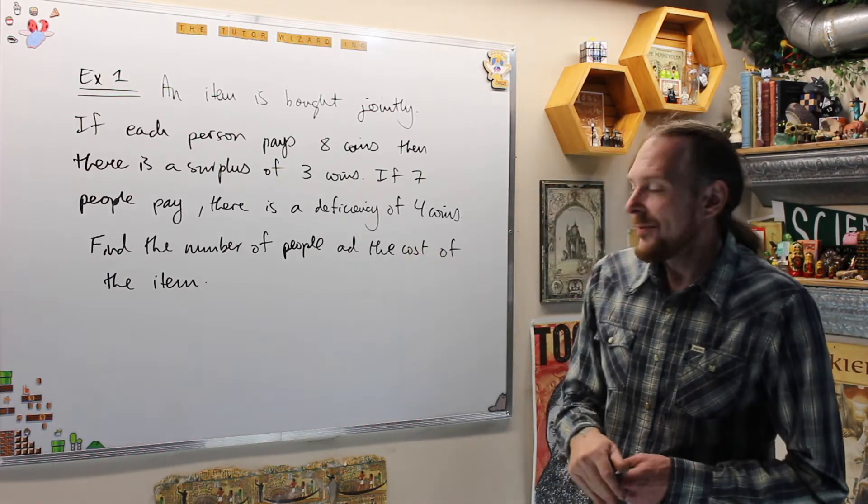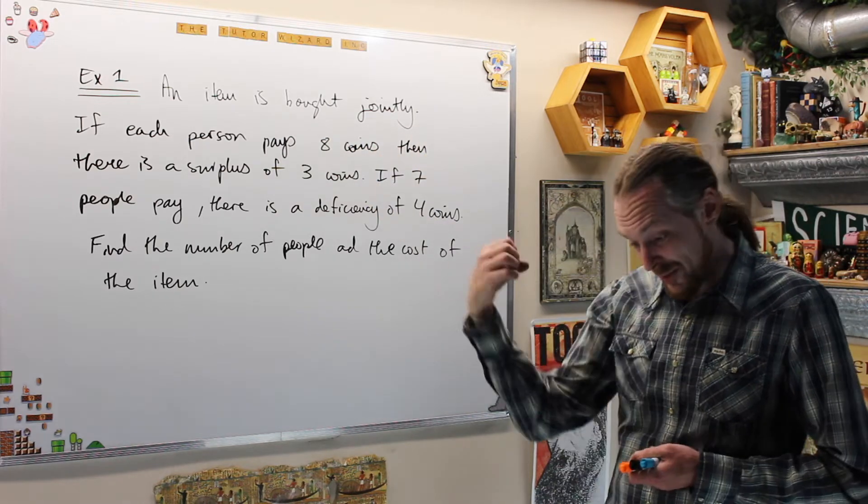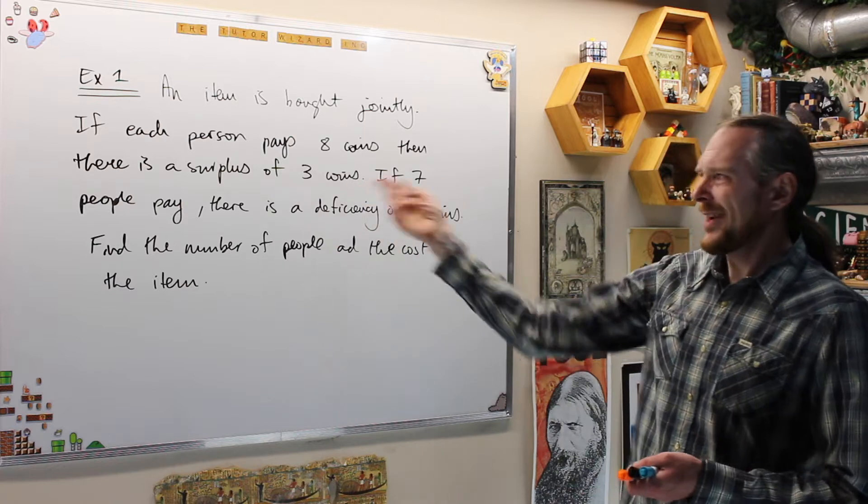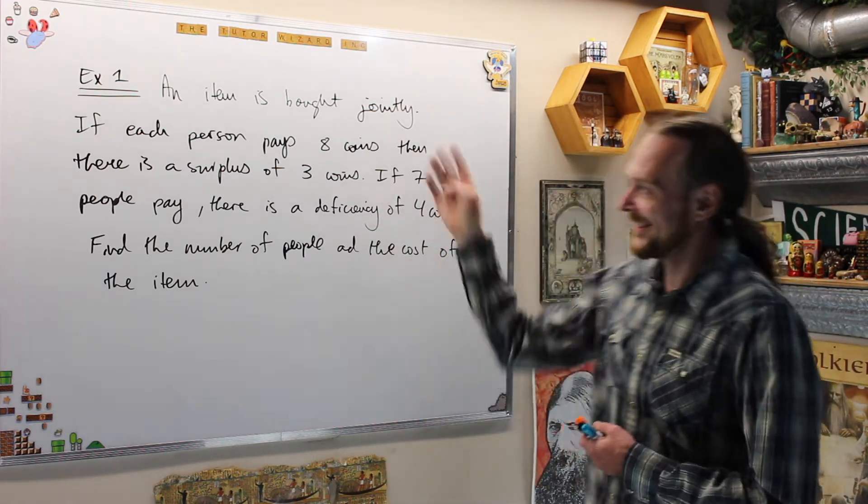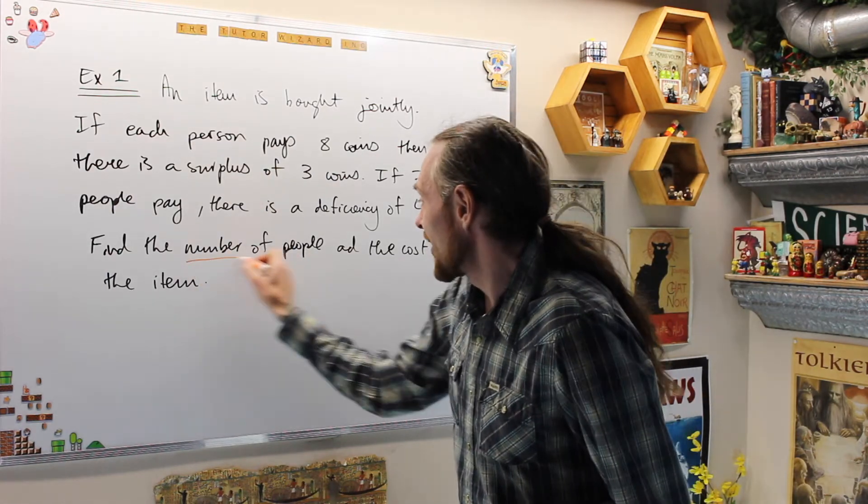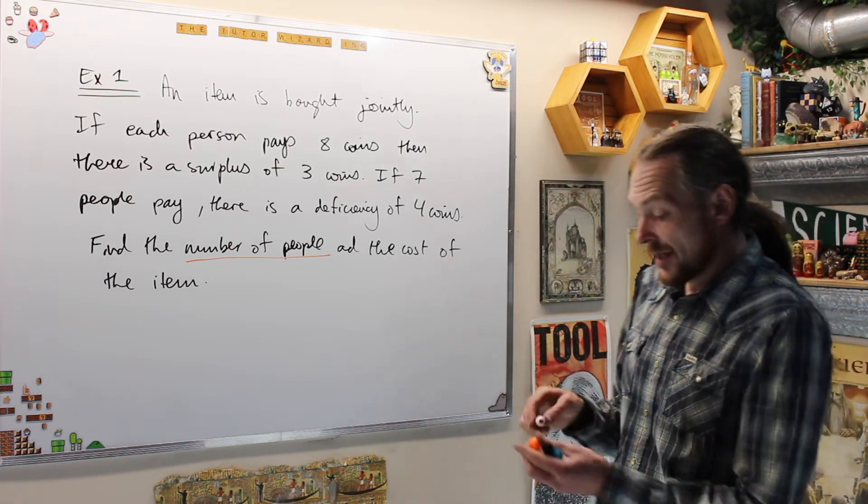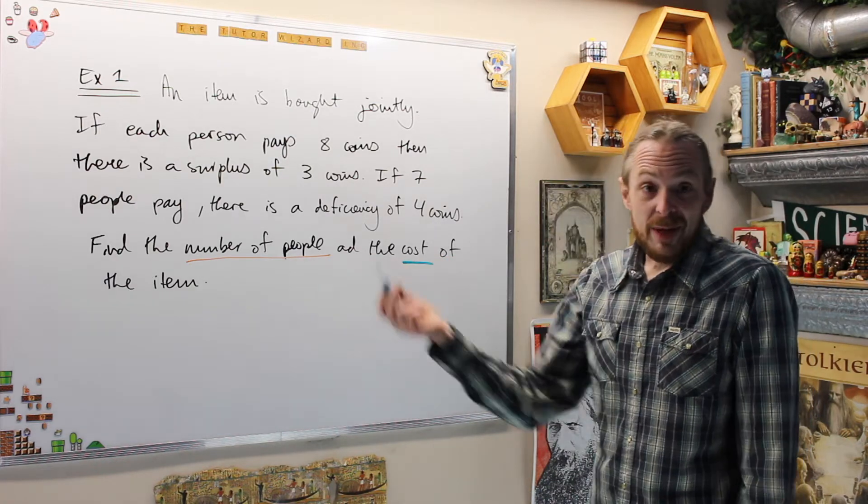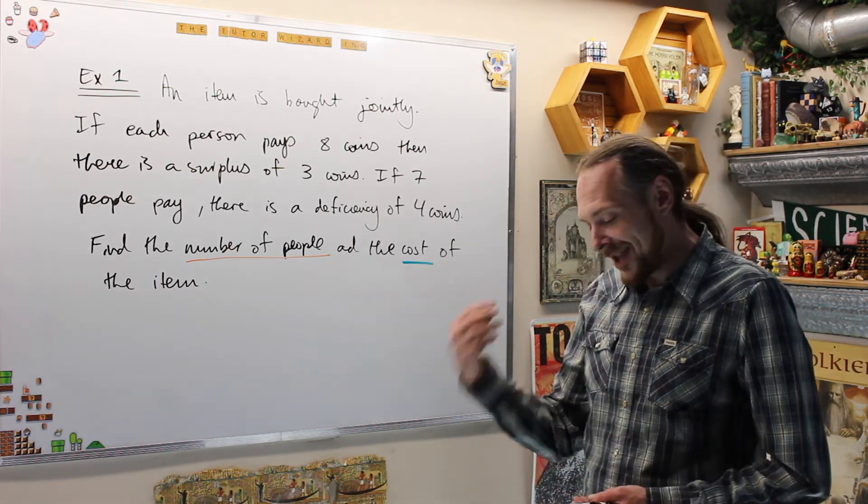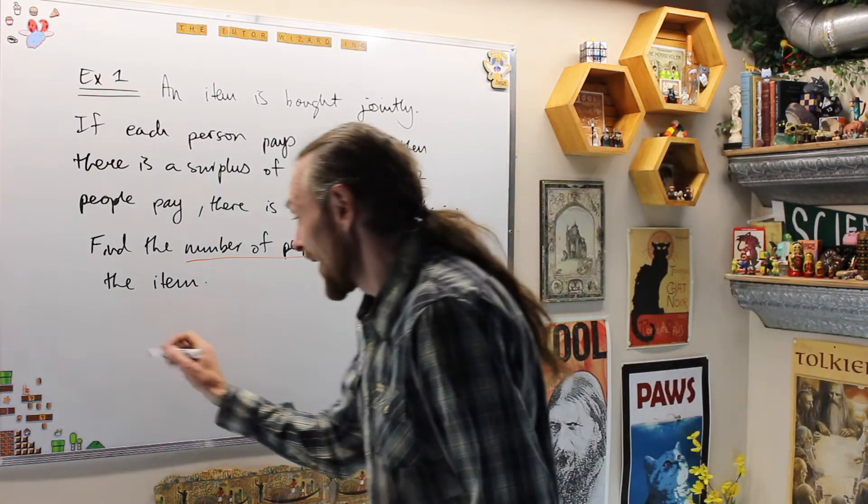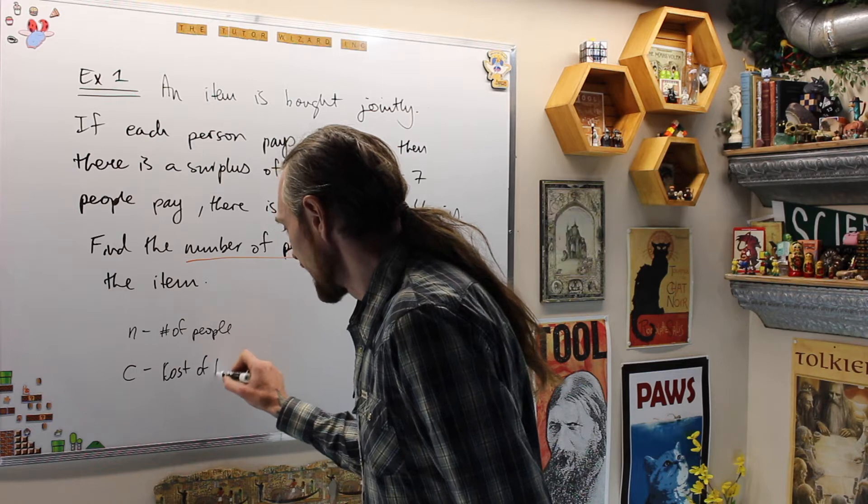Before we systematically phrase this, I'll show you ad hocly what we're going to do with this. The starting idea is to take this rhetoric or word problem and start using the power of Algebra to phrase what's going on. What you want to do is, it talks about people. I'm going to call that something. I don't care what you call it, but then it will have Algebra, and then we can put them into equations. We also need the cost of the item. So I need to find the number of people, N, and the cost, C.